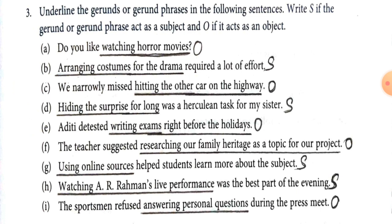Number B: Arranging costumes for the drama required a lot of effort — here, arranging costumes for the drama is a gerund phrase and it plays the role of subject. Number C: We narrowly missed hitting the other car on the highway — hitting the other car on the highway plays the role of object; it is the object of the verb missed.